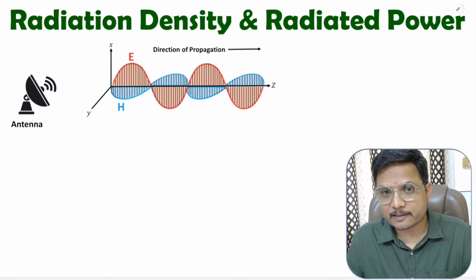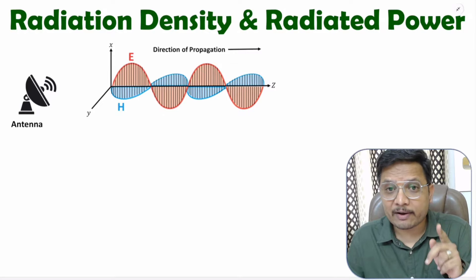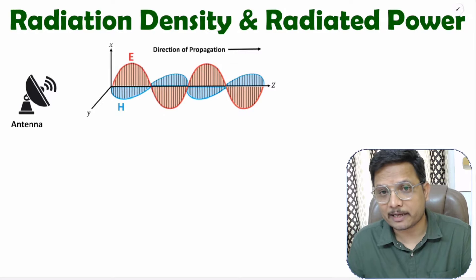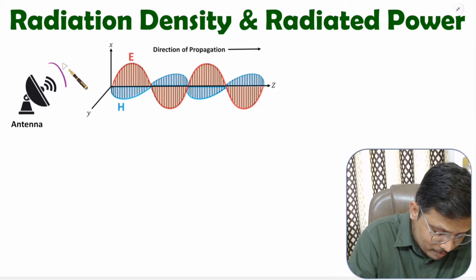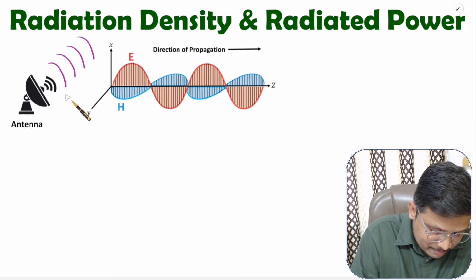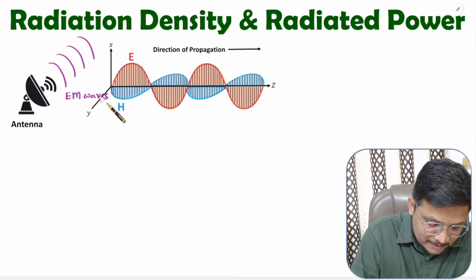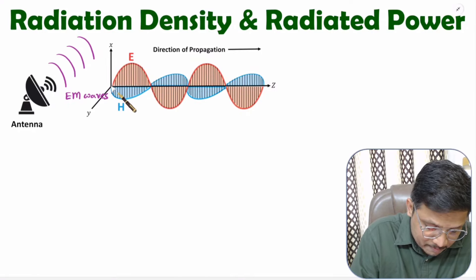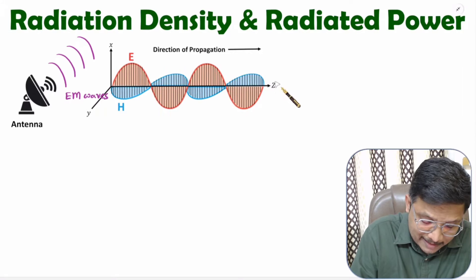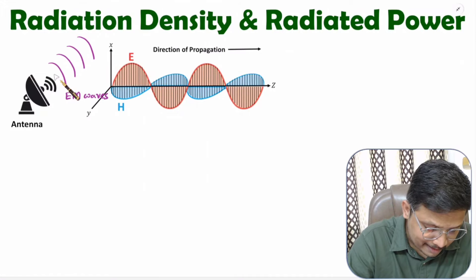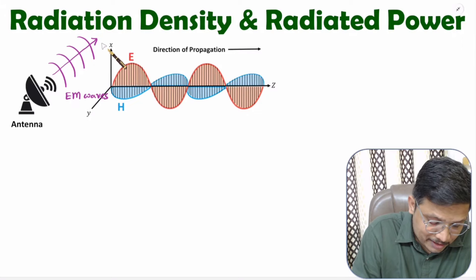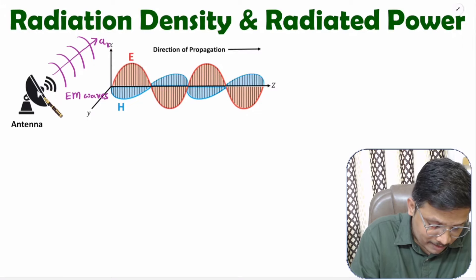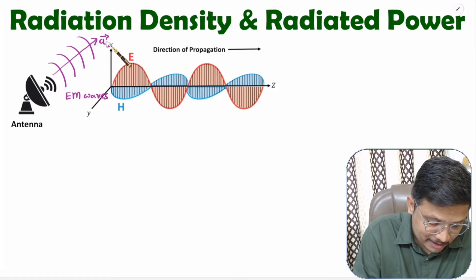Antenna radiates EM waves in space. Based on electromagnetic waves, we can identify radiation density as well as radiated power by antenna. You can observe the EM wave radiated by the antenna graphically, where the electric field varies with respect to the x-axis, the magnetic field varies with respect to the y-axis, and the direction of propagation is along the z-axis. Practically, the EM wave is radiated in the radial direction, represented as AR direction.